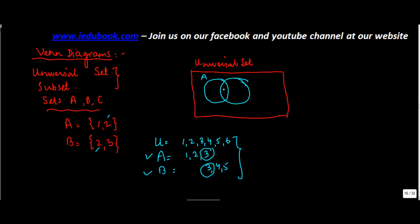So this common region will represent three, which is the common number. What else does A have? A has one and two. So you put one and two here. What else does B have? Four and five. Okay, now the universal set in itself contains more than these numbers. What is it? It is six. But six does not fall in either A or B. And what is the universal set? Universal set is represented by this entire rectangle, so you can put six here.